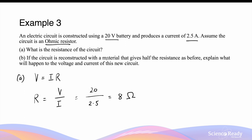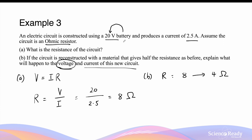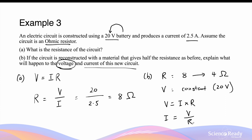If the circuit is constructed with a material that gives half the resistance — from 8 ohms to 4 ohms — what happens to the voltage and current? The voltage remains constant at 20 volts since it is supplied by the battery and won't change unless the battery is replaced. Since voltage stays constant but resistance is halved, current is inversely proportional to resistance — when resistance decreases by a factor of two, current increases by a factor of two, going from 2.5 amps to 5 amps.